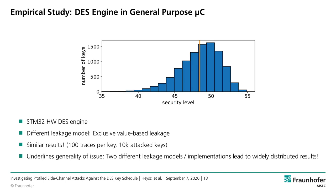We then used a totally different device: an off-the-shelf general-purpose microcontroller, an STM32, using its hardware DES engine, and performed a similar attack. In this case the leakage model was completely different — this device leaks the values of bits, not the XOR transitions between values. Yet an attack against this device still leads to similar results: a wide distribution and obviously weak keys to be expected.